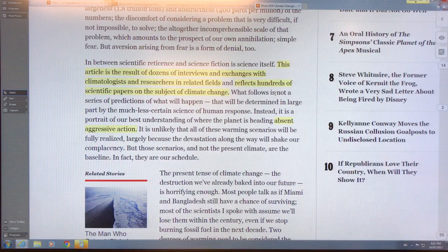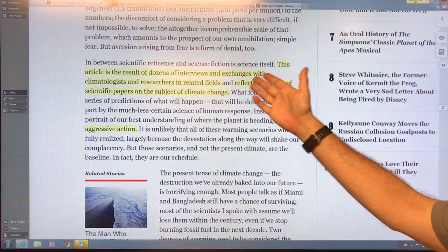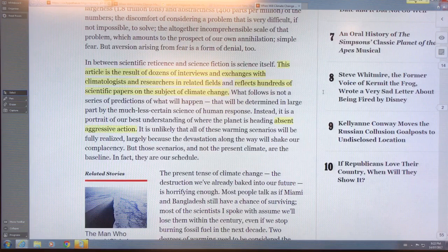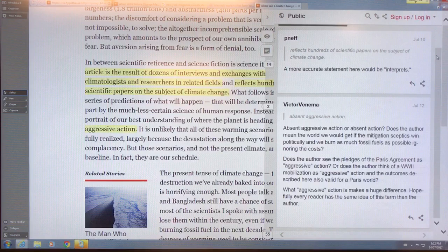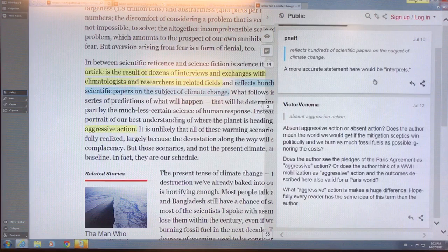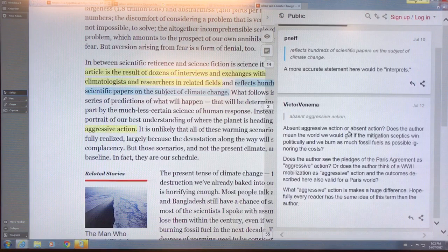This article is a result of dozens of interviews - the guy did his research. But of course there's criticisms. A more accurate statement would be interprets versus reflects. Absent aggressive action we're heading into a bad place. What do we mean by aggressive - meeting the Paris agreement? We need a World War II mobilization - that's aggressive action. Paris I would argue is just tapping at the edges. What aggressive action makes a huge difference? Perhaps this should have been elaborated on.